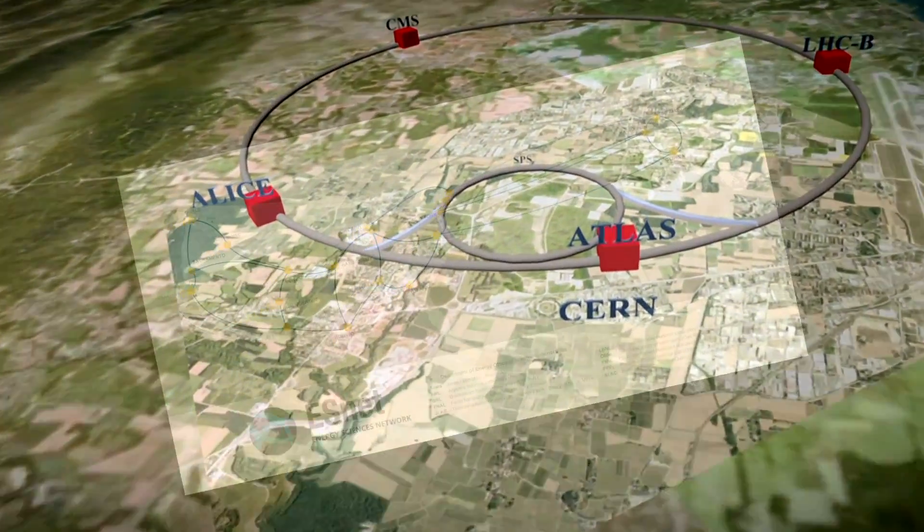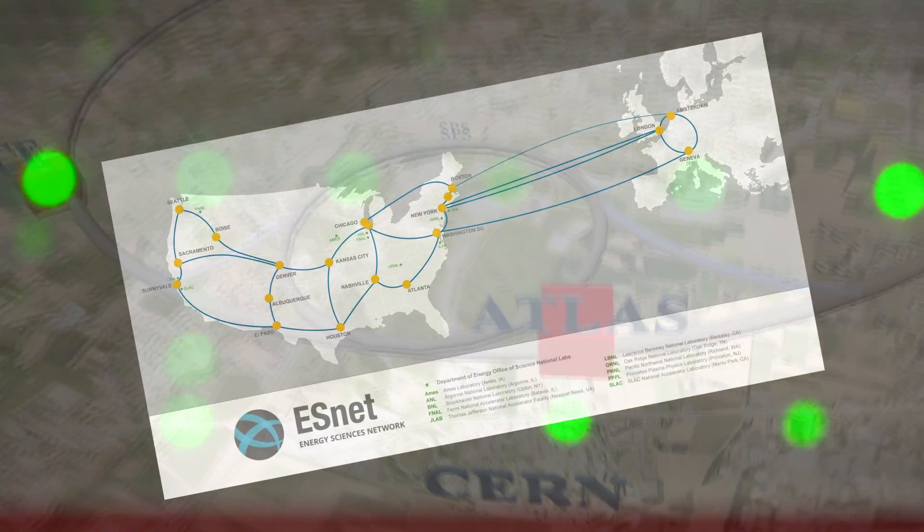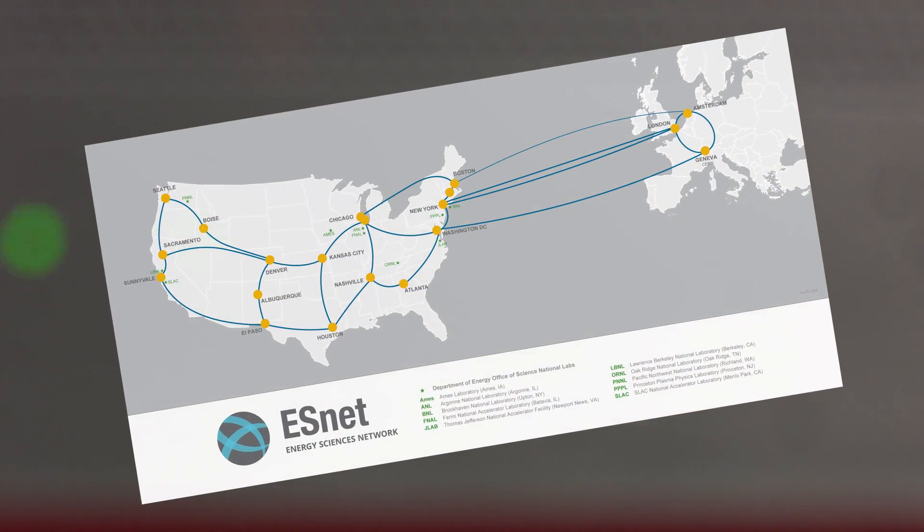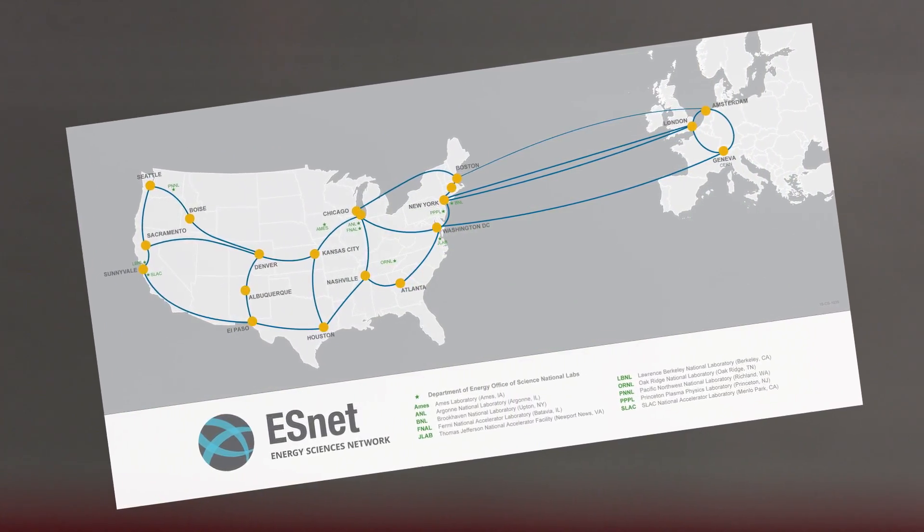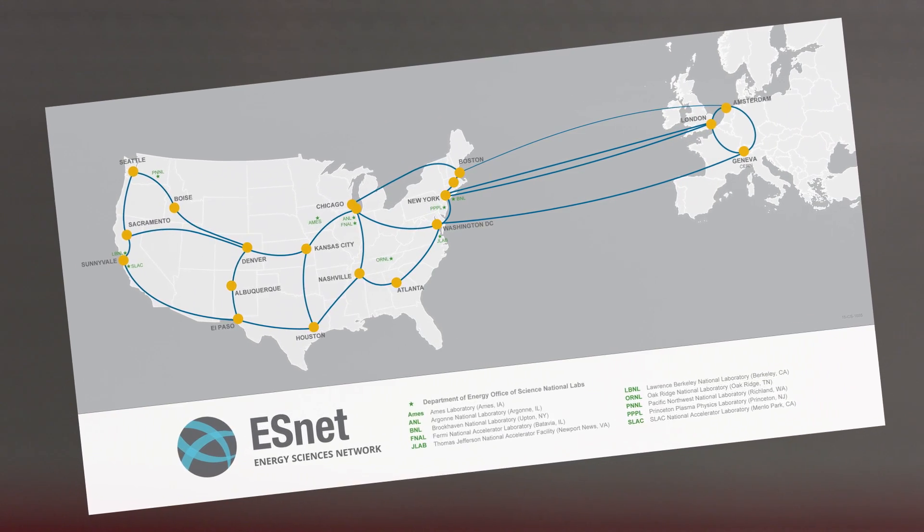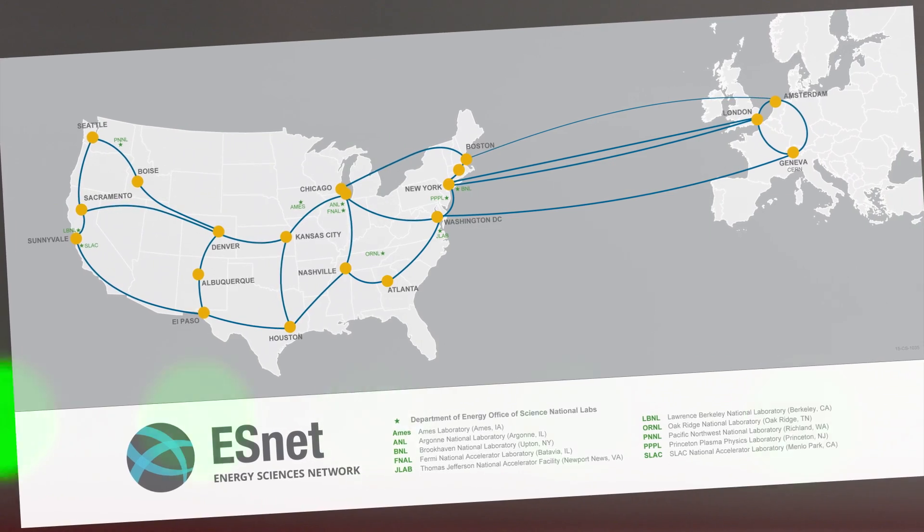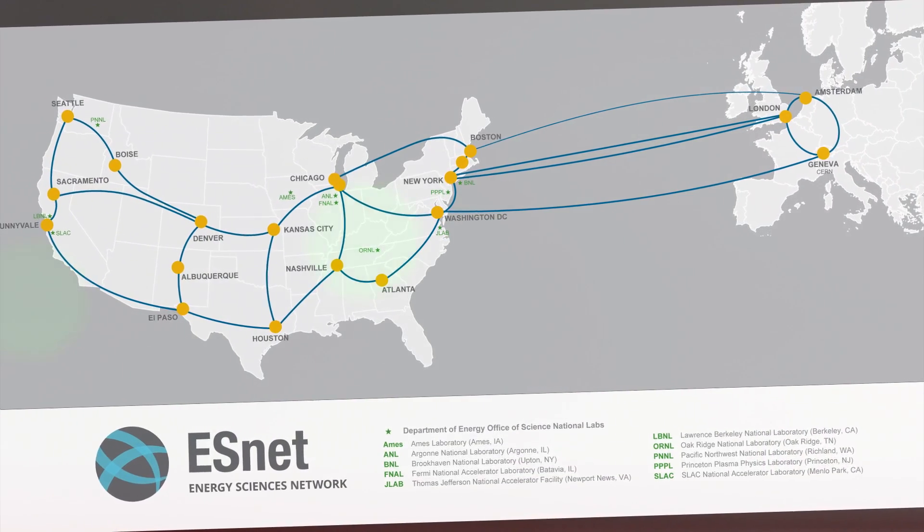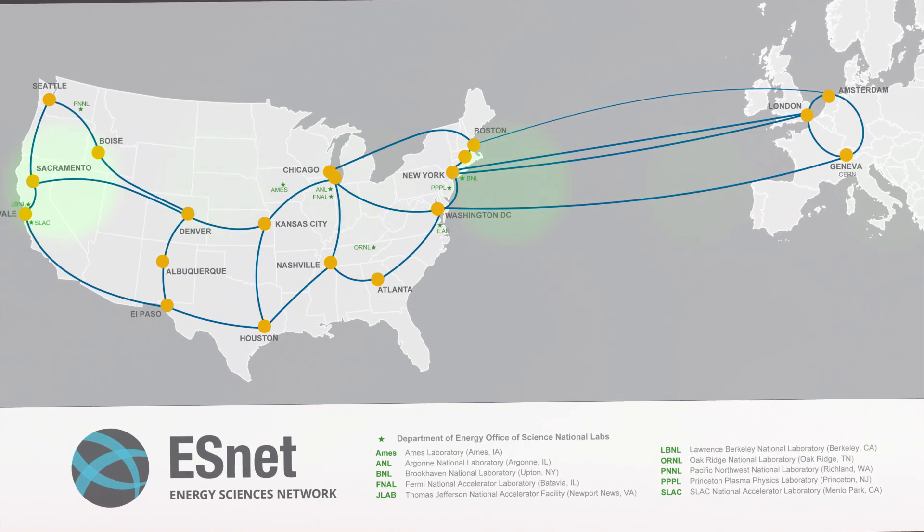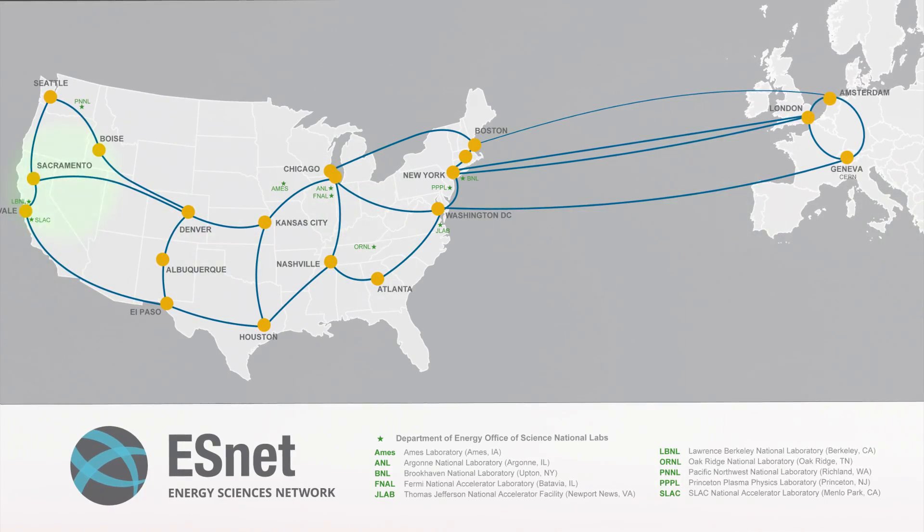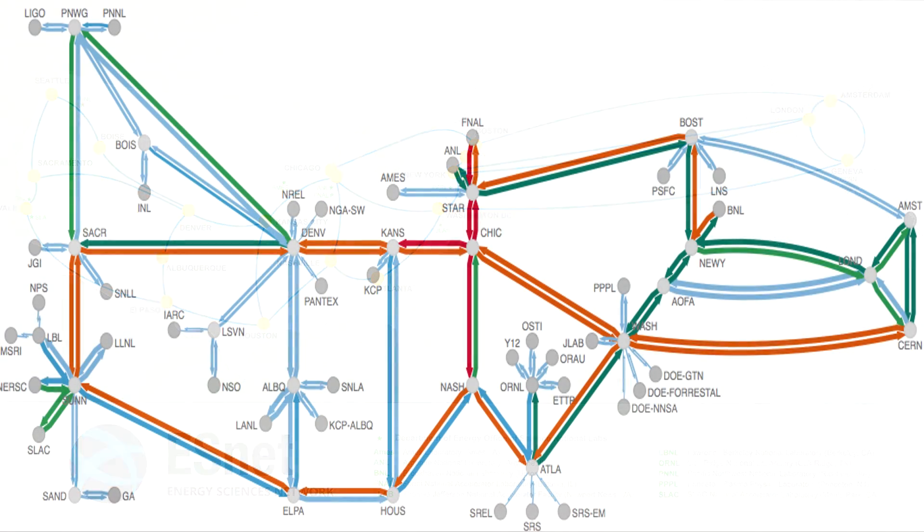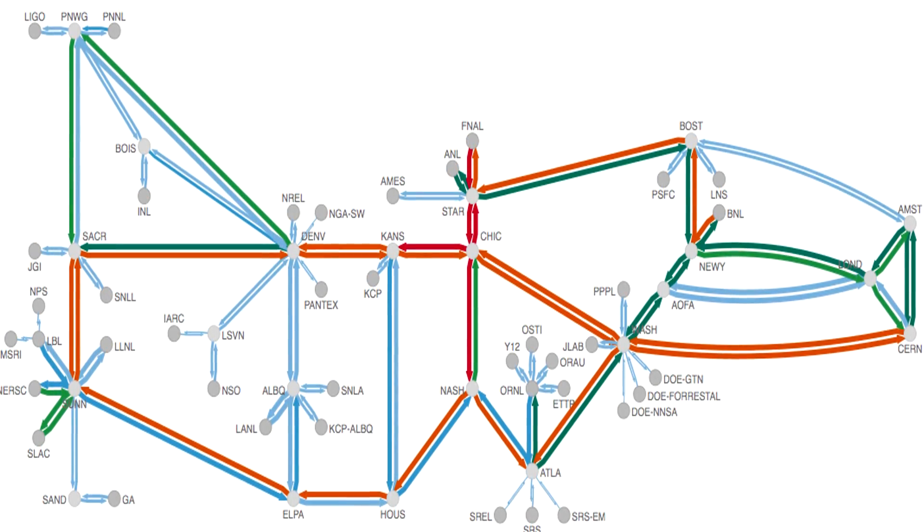But the RACF is far more than tens of thousands of hard drives. It is linked to ATLAS collaborators around the world via high-speed, 100 gigabit per second, transatlantic cables, built by the Department of Energy's Energy Sciences Network, or ES-NET. The RACF is now at the center of a global computing network.